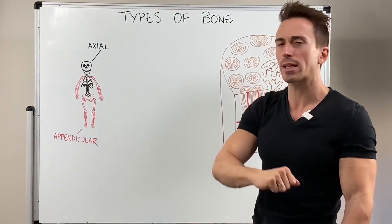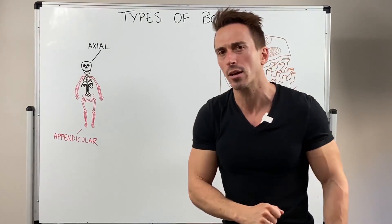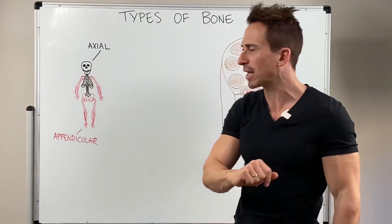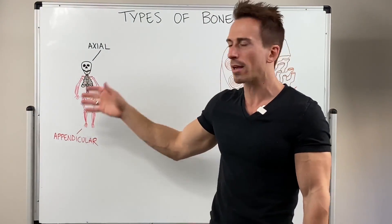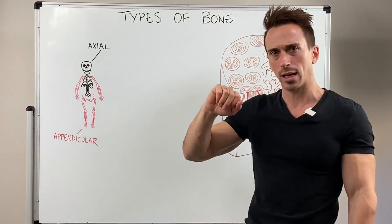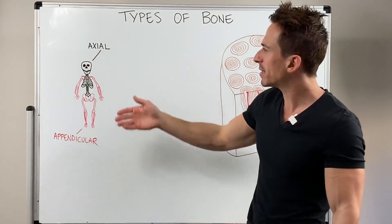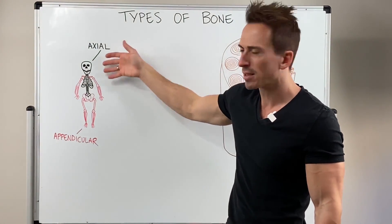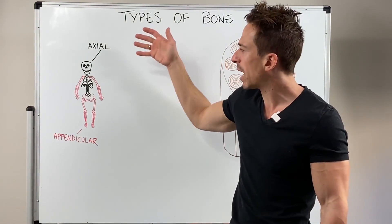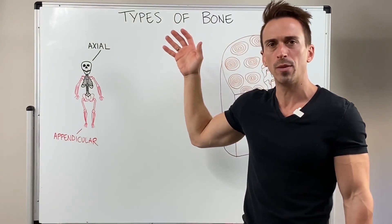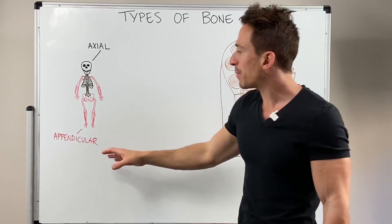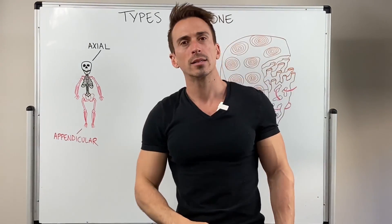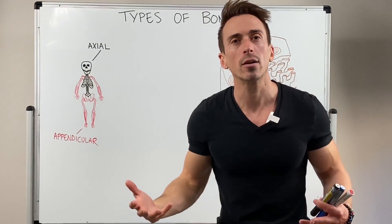I've drawn up my little skeleton here and you can see I've highlighted different colors. All those bones in black are the axial skeleton — basically the skull, the rib cage, the sternum, and the vertebral column. The appendicular skeleton is everything else.